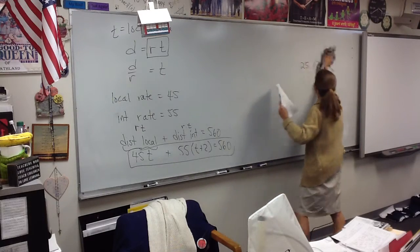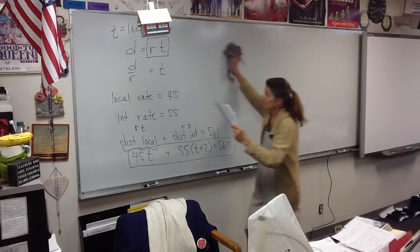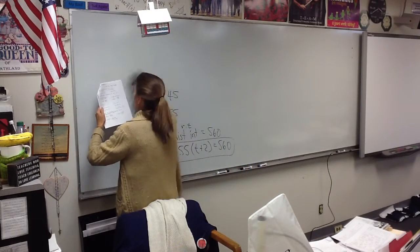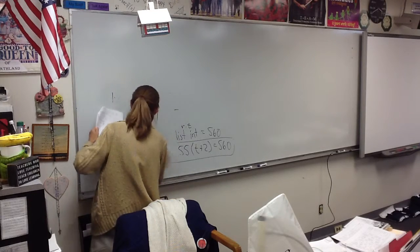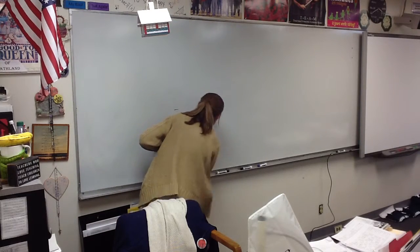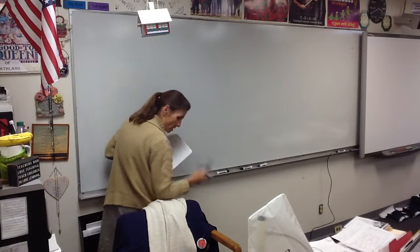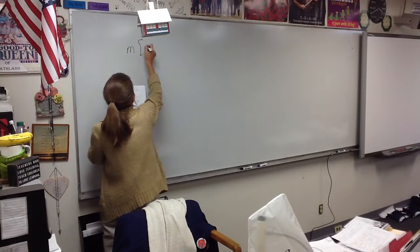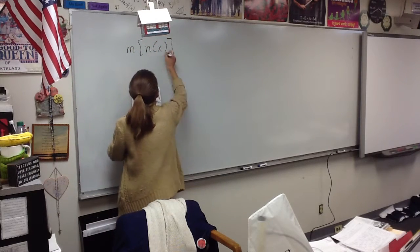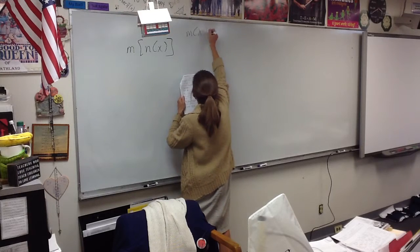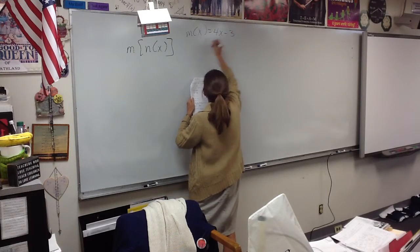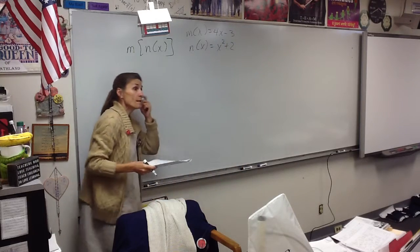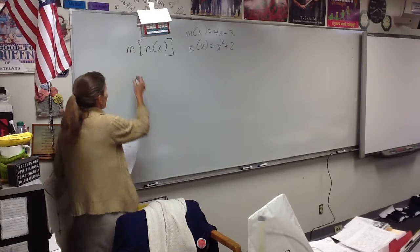Number 1. We have two functions, and we're going to do them in composition and do different things with them. Alright, so here we go. Number 1, part A. Find m of n of x, and m is 4x minus 3, and n is x squared plus 2. Two random functions, and we're going to do this.